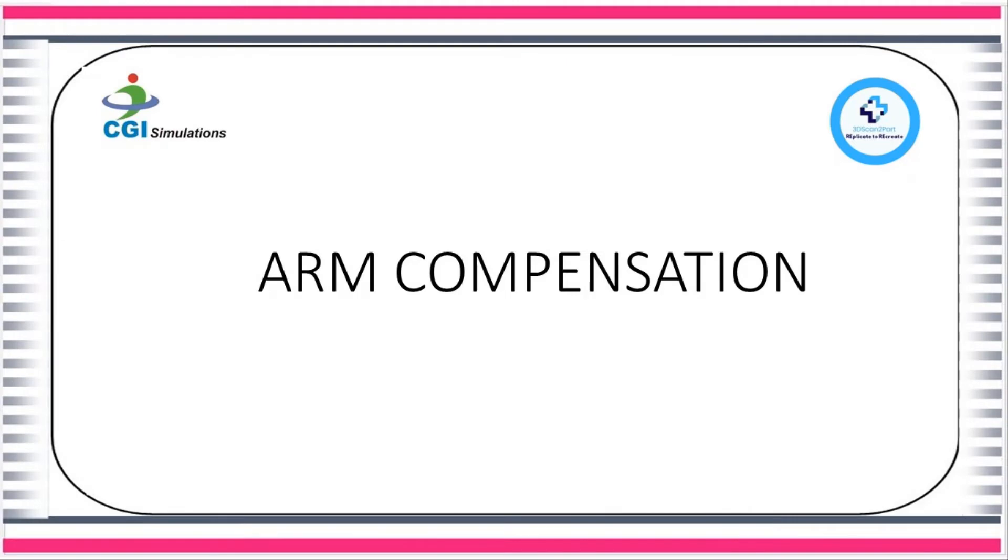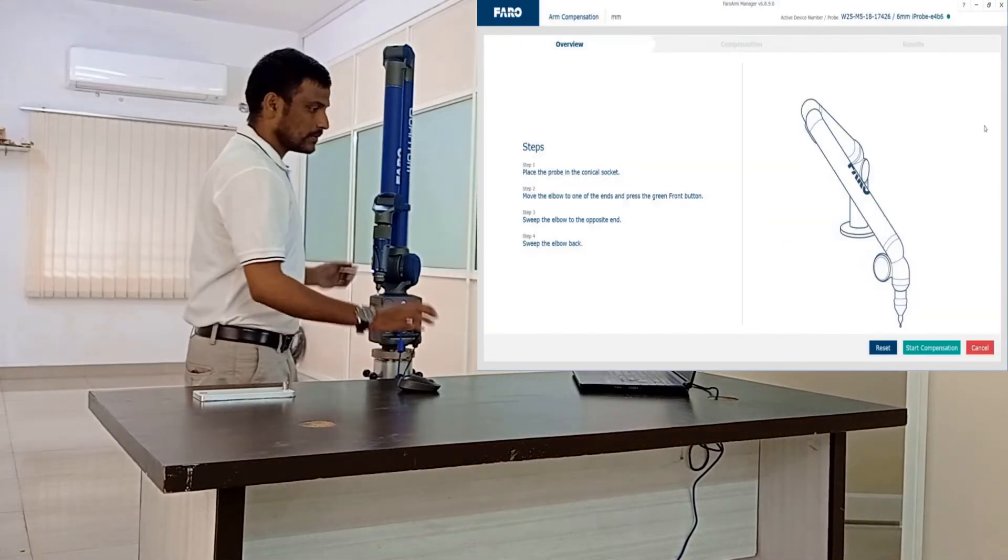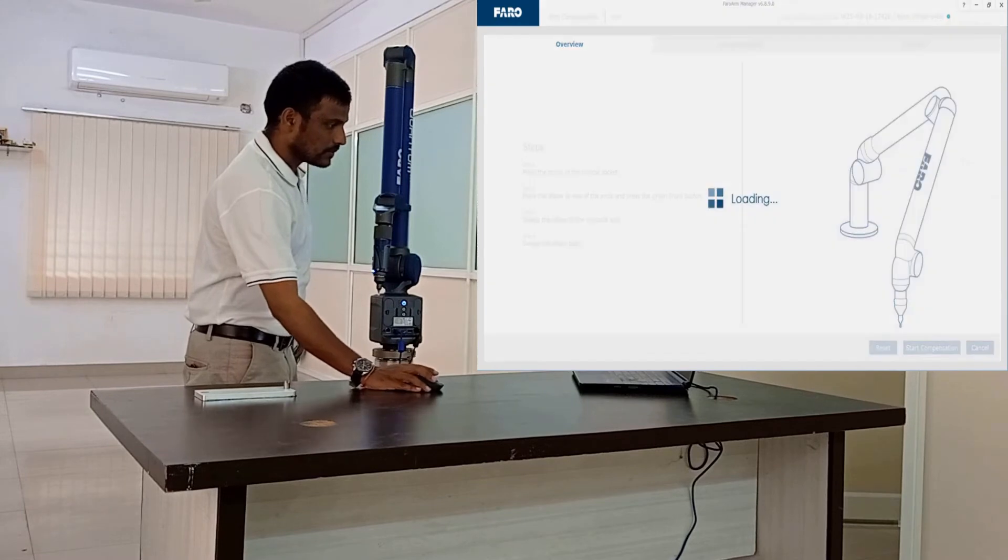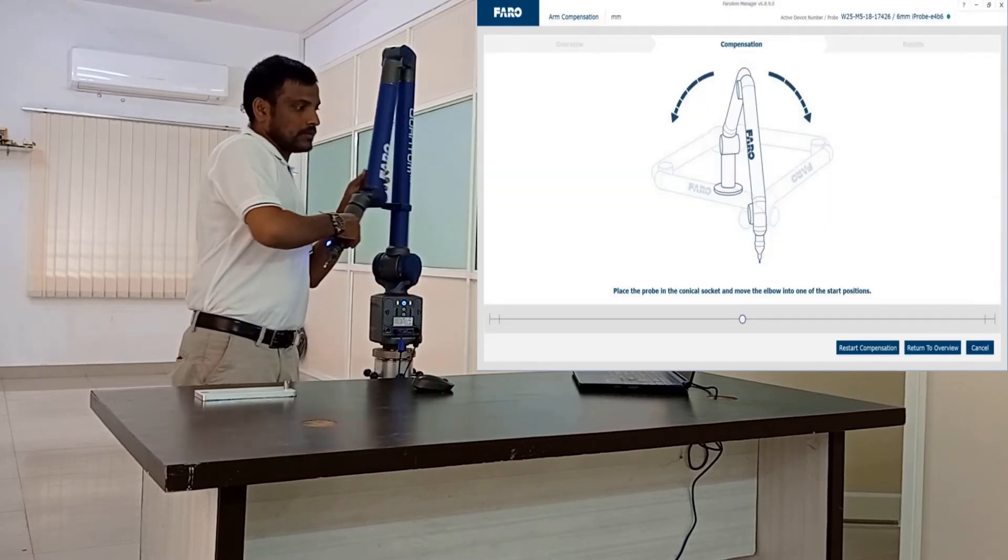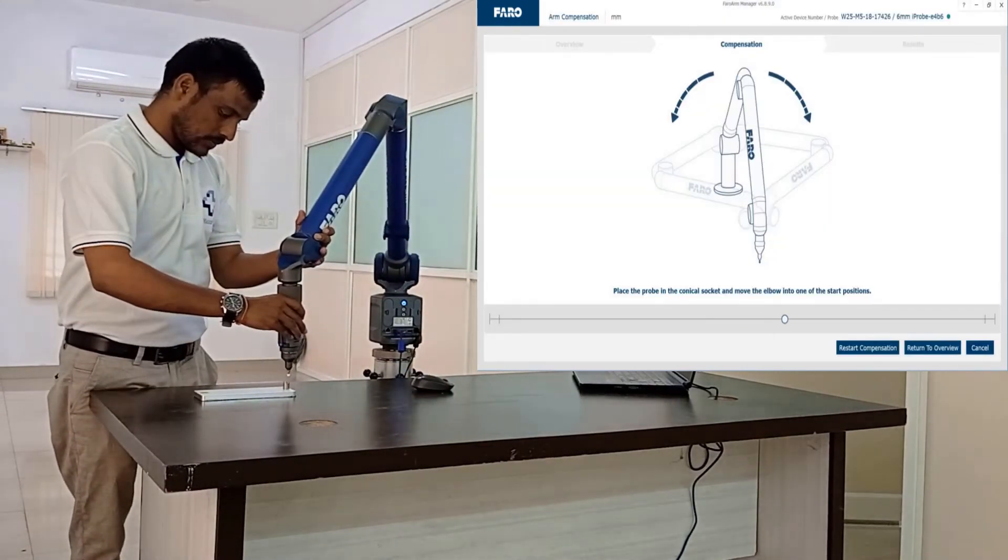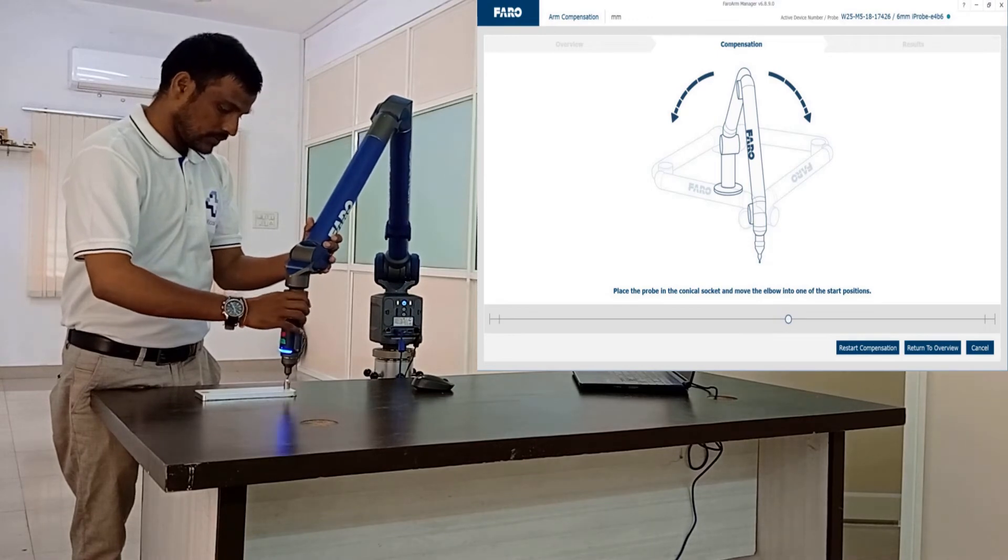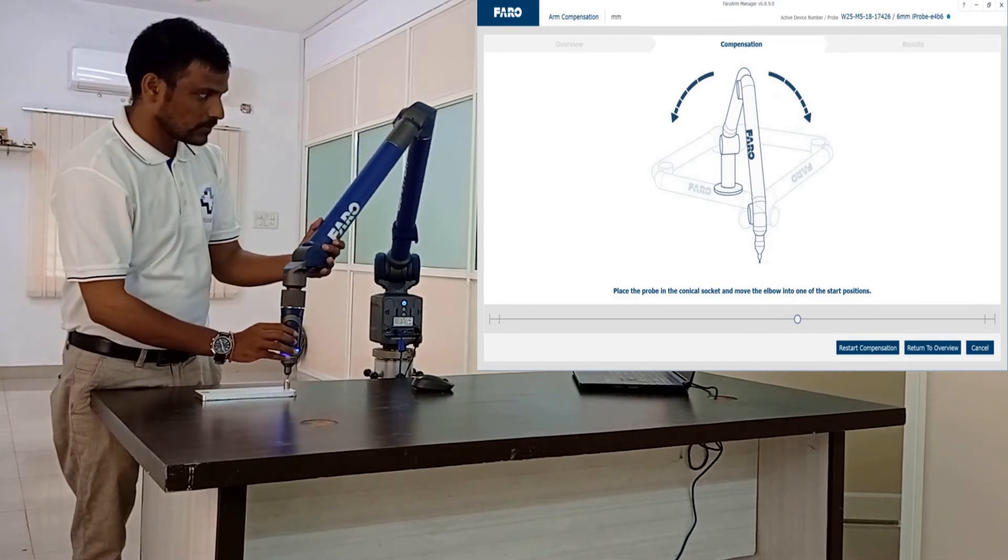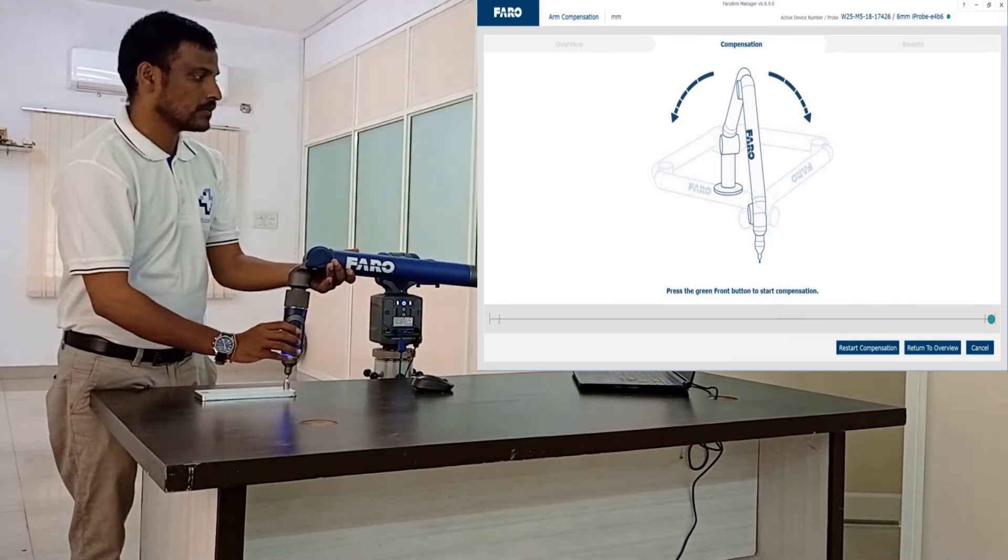Let us do arm compensation. In the Faro arm manager click on arm compensation. Place the probe in the conical socket and move the elbow to one of the ends. Till the green indicator on the laptop dialog box is dragged to the end.